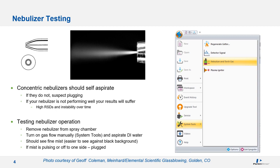To test a nebulizer, remove it from the spray chamber, put the sample tubing that connects to the peristaltic pump in a container of DI water, manually turn on the nebulizer gas using the system tools, nebulizer and torch gas test tool in the Syngistix software. Observe the aerosol against a black background and become familiar with what is normal for your nebulizer. If the aerosol doesn't look normal, you need to perform some maintenance.